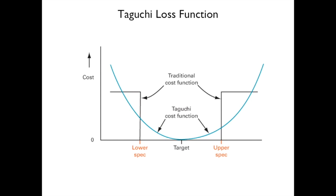The Taguchi loss function differs from the traditional cost function. The traditional view assigns high costs only outside the lower and upper spec limits, with no cost in between. The Taguchi function assigns cost as you move away from the target, even within spec. This encourages focusing on a narrow target area, resulting in a normal distribution centered tightly at the target.